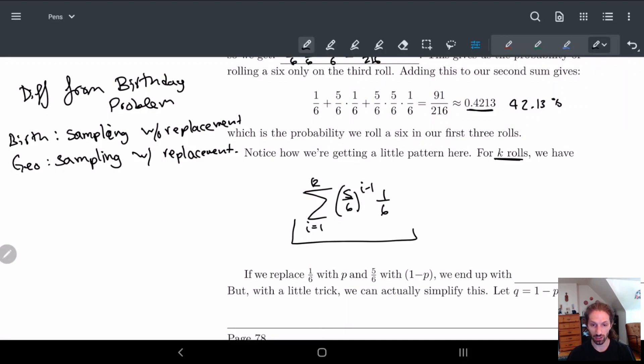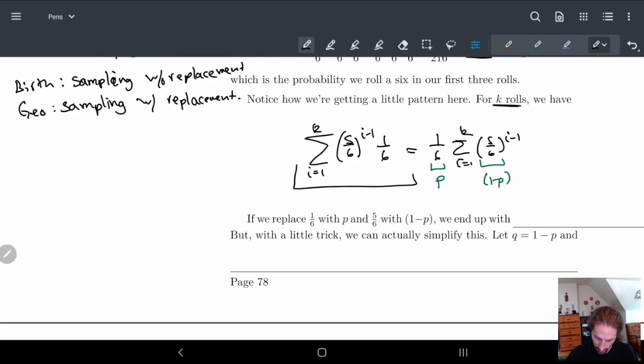So this is the kind of formula we end up getting. And here, what we can do is we can actually just replace this with variables. So this 1/6, well actually, I can bring this 1/6 in front. And then here we have 5/6 to the i minus one, i equals one to k. And here we can look at this 1/6 is our probability of rolling a six. This 5/6 is one minus p. And so we can actually basically just replace this and generalize this to get, well, we just do p times the sum of i equals one to k, one minus p to the i minus one.